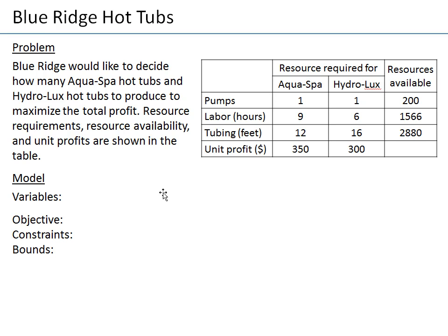We will use a linear programming model. A linear programming model consists of four main components: decision variables, an objective function (something that we will optimize — maximize or minimize), constraints, and bounds — a special type of constraint which are lower bounds or upper bounds on variables.